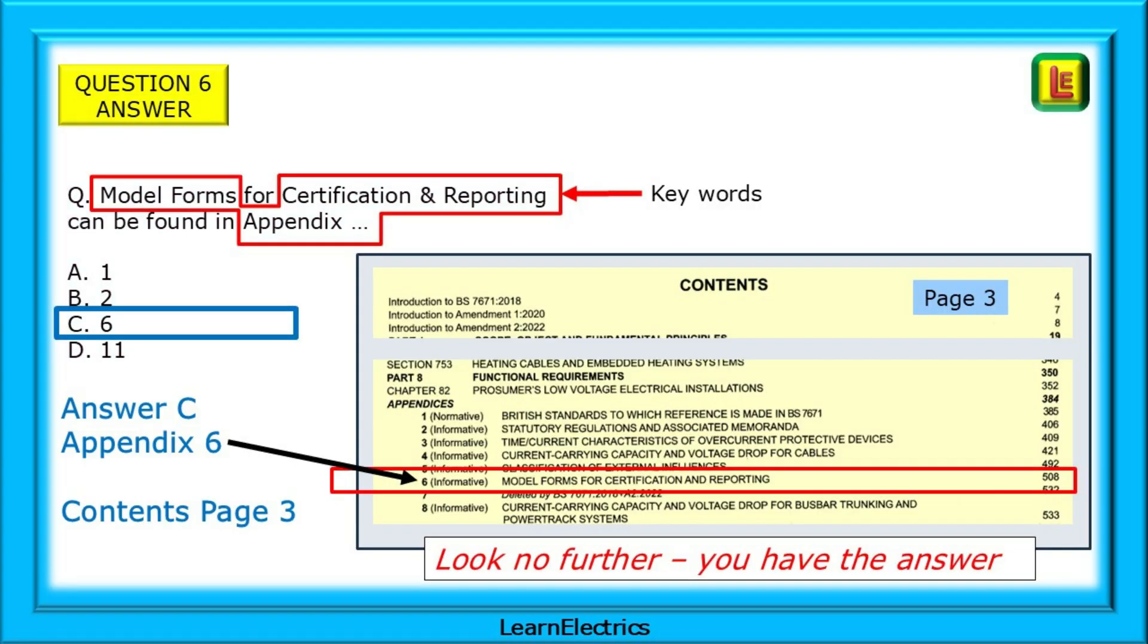The answer choice is C, appendix 6. It's as easy as that. Look on page 3. We know it's an appendix, so look at the title of each appendix in turn. When you get to appendix 6, it has all the key words. Look no further. You have the answer. You do not need to go to appendix 6.